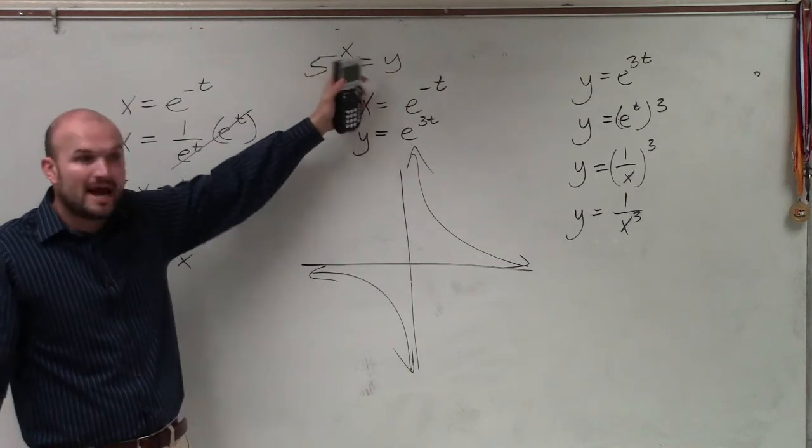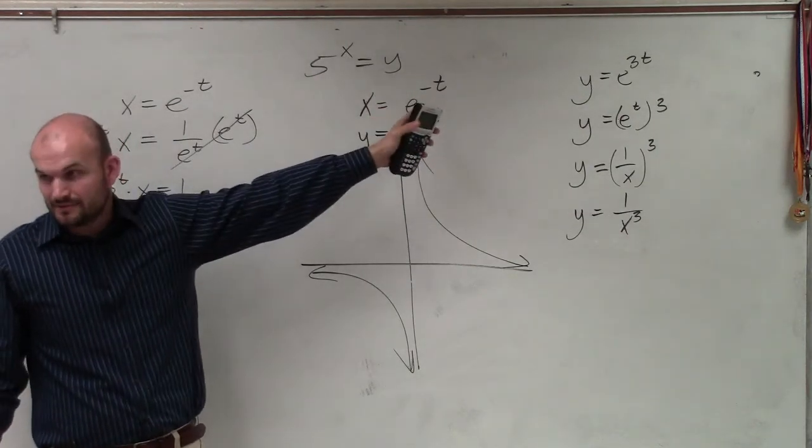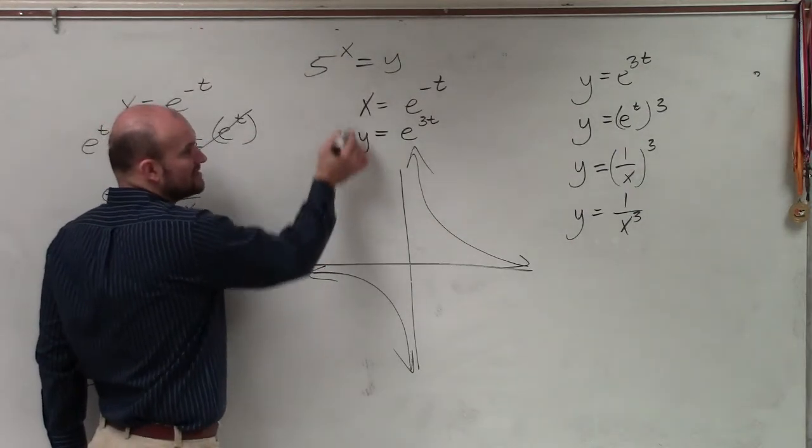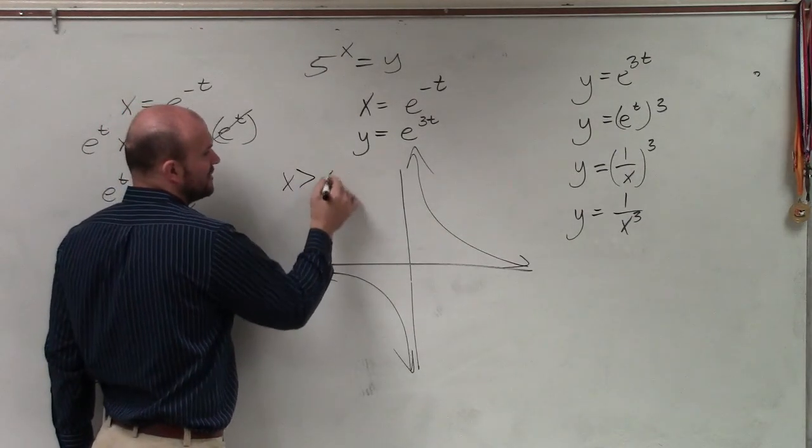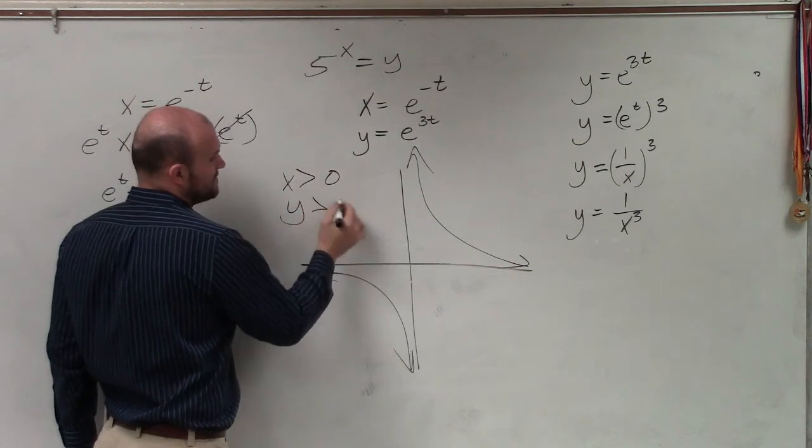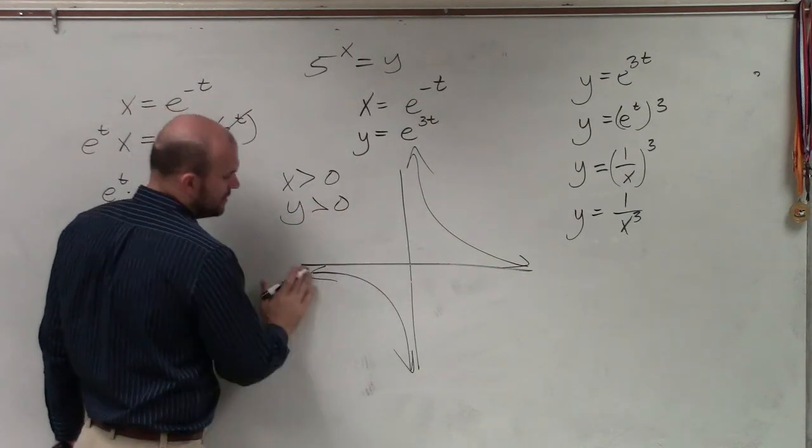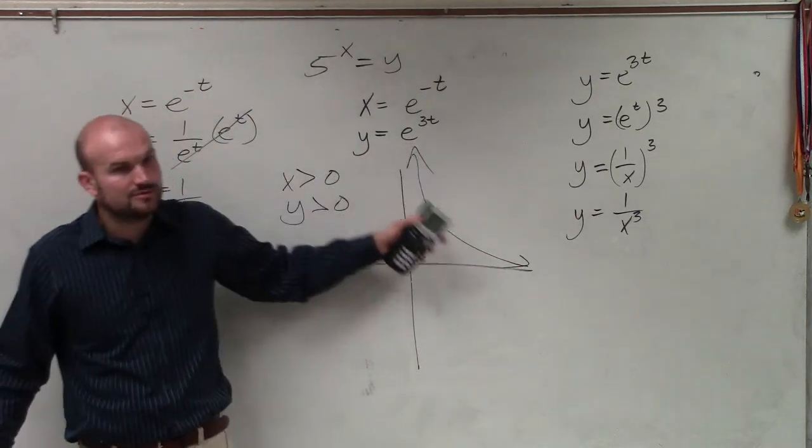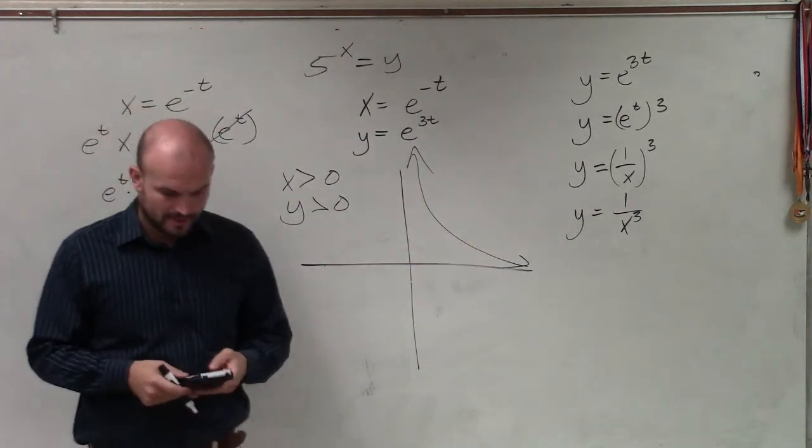You cannot raise 5 to any number and make it negative. So therefore, these x and y, x has to be greater than 0, y has to be greater than 0. So therefore, your graph is only going to be this part of the reciprocal function.